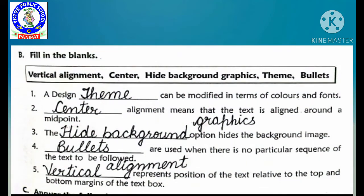Now Part B, fill in the blanks. First: a design dash can be modified in terms of color and fonts. Ek design kya hum modify kar sakte hain, color or font change kar sakte hain — our answer is theme. Second: dash alignment means that the text is aligned around a midpoint. Kaun si alignment mein text ka midpoint beech mein hota hai — our answer is center.